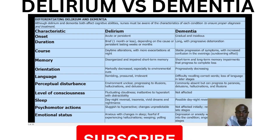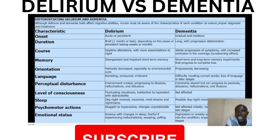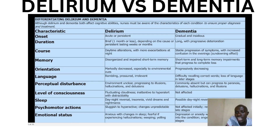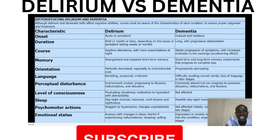If you look at dementia, dementia is a chronic, progressive neurological disorder characterized by decline in cognitive abilities, including memory, thinking, reasoning, language, and problem solving. Alzheimer's disease is the most common cause of dementia, but there are other types such as vascular dementia, Lewy body dementia, and frontotemporal dementia.